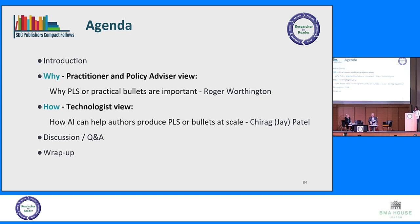We're here to discuss the why and how of this with you all, hoping to drive greater use of plain language summaries and bullets to share actionable implications of research with those outside academia who can put them into practice and make change. First, Roger will share why this is so important from his experience as both a practitioner and a policy advisor. We acknowledge that producing these summaries places a burden on authors and publishers, and we've heard from researchers that they're not trained to write for lay audiences. So we asked Jay to talk about how AI can support publishers and authors at scale.